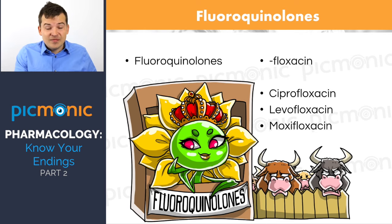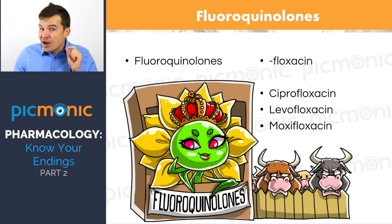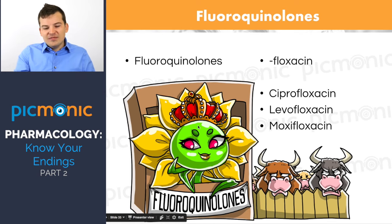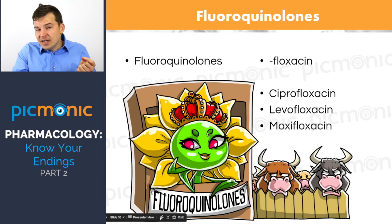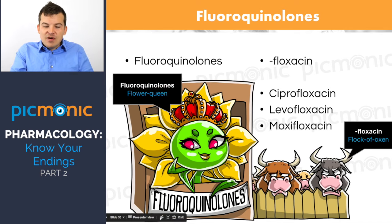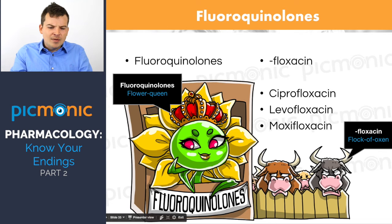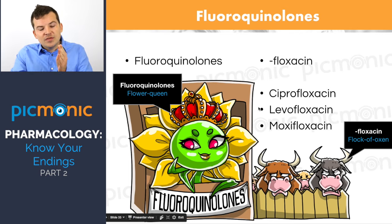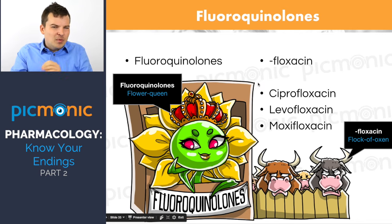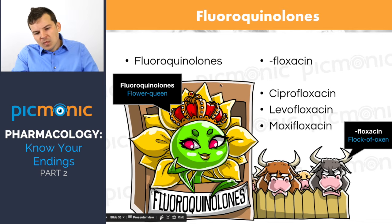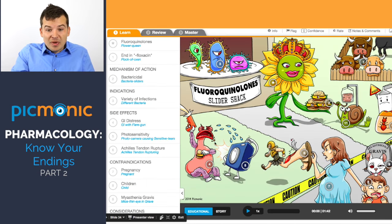The next class is fluoroquinolones. You can remember them by the '-floxacin' ending — a flock of oxen. We've got our Flower Queen character for fluoroquinolones. Examples include ciprofloxacin, levofloxacin, and moxifloxacin. Many fluoroquinolones work well in the urinary tract; levofloxacin is used a lot for respiratory infections.